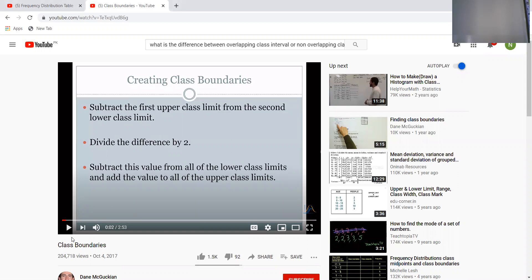Class boundary means if the grouped data is not in overlapping form — the classes are not overlapping. So if you want to make it overlap, we need to create a class boundary which overlaps the data.